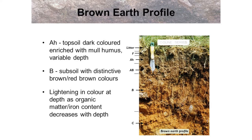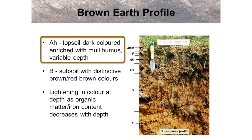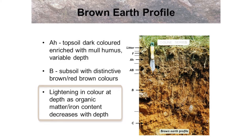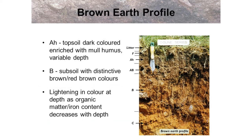This slide shows a picture of a typical brown earth soil. The A horizon topsoil in the soil profile is usually relatively thin but it varies in depth, and it is enriched with mull humus. The B horizon or subsoil has distinctive bright colours of brown or red-brown, and the colour tends to lighten as you move down the soil profile as the organic matter and iron content decreases with depth. The C horizon is relatively unaltered parent material, usually brightly coloured or a colour inherited directly from the parent rock.